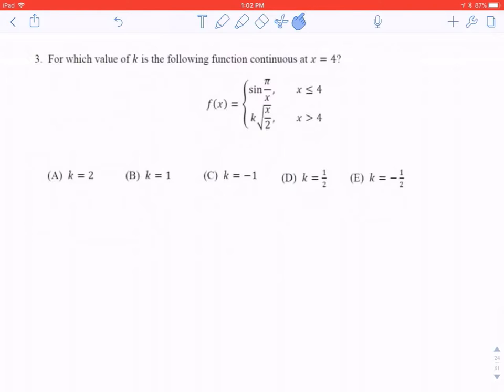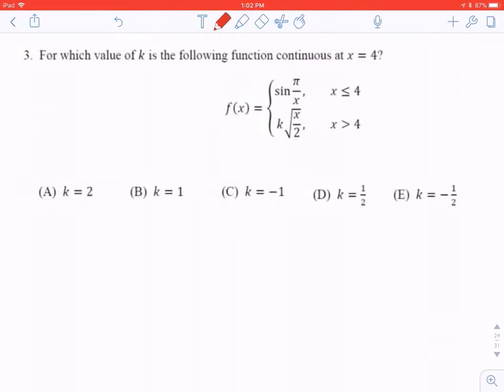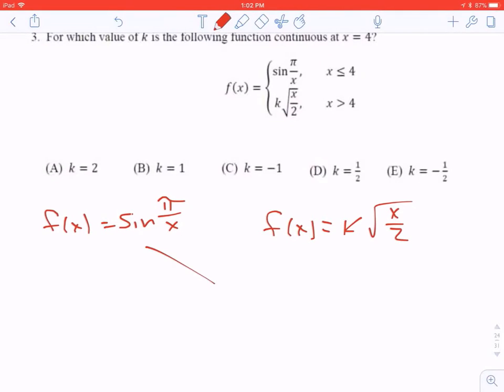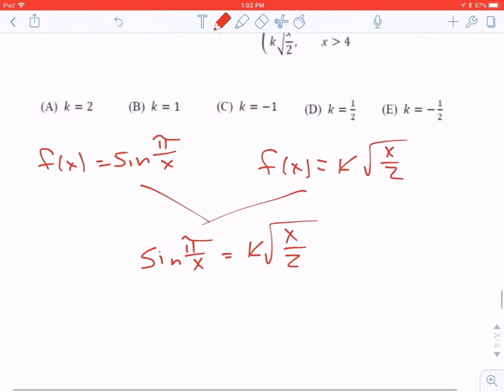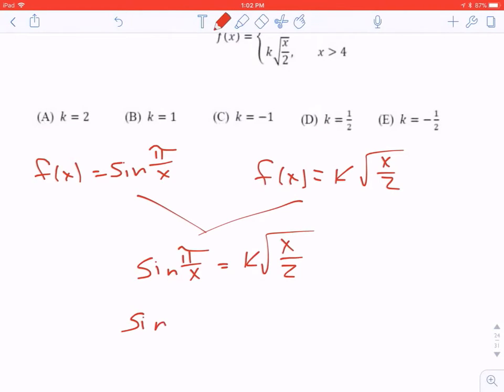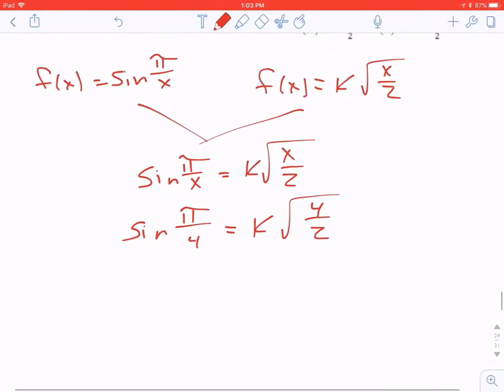Moving on. For which value of k is the function continuous at x equals 4? Well, let's see. So if we take the function sine of pi over x and we take the function k square roots of x over 2, those have to be equal to each other. Because if they're equal to each other, the y values, that means it would be continuous. We want to know when this is 4, so we replace x with 4. And then we just simply solve the equation for k.